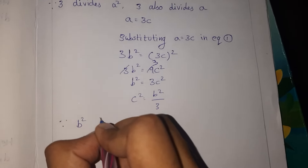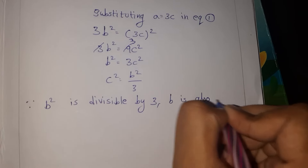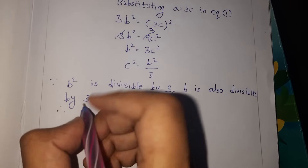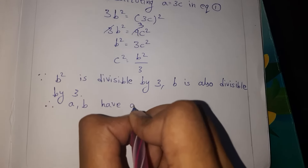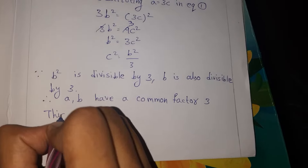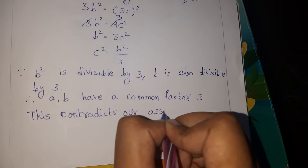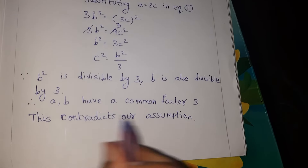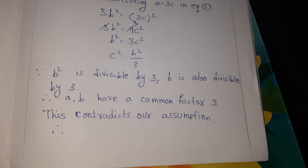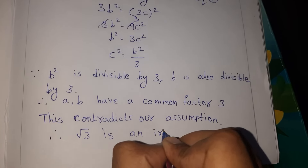Since b² equals 3c², b² is divisible by 3, so b is also divisible by 3. Therefore, a and b have a common factor of 3. This contradicts our assumption that a and b are co-primes. Therefore, root 3 is an irrational number.